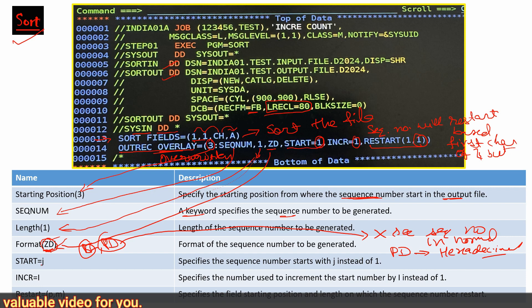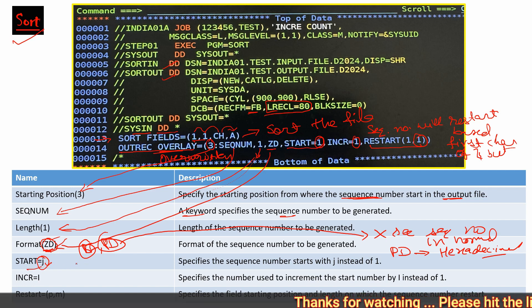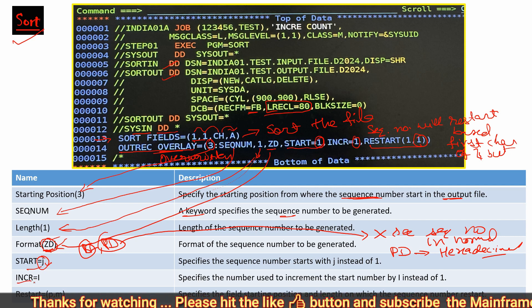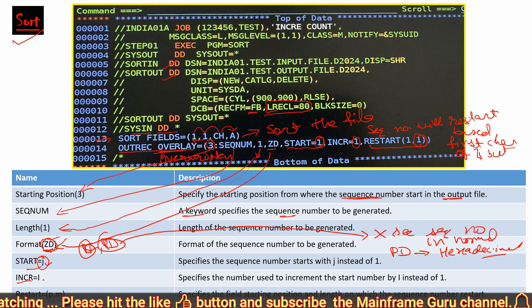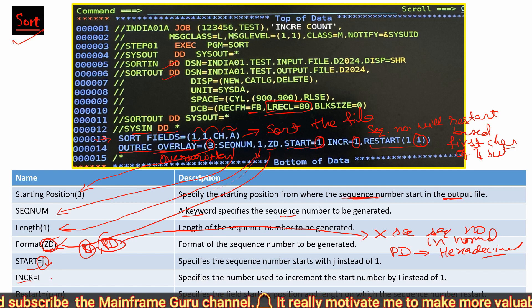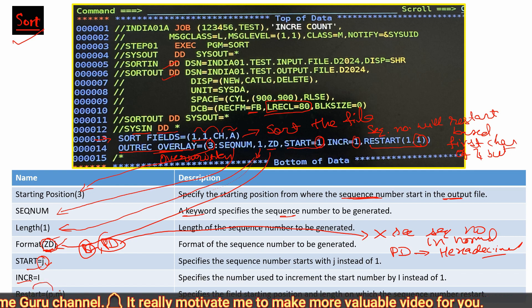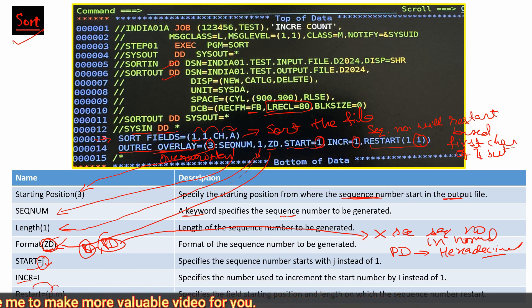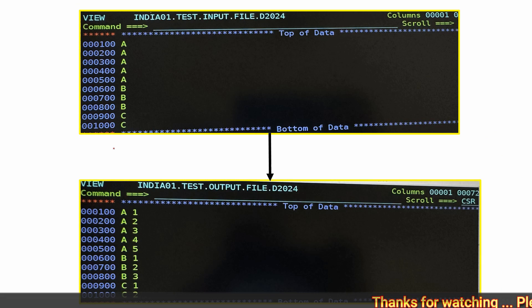We have used zoned decimal so we can see the sequence number. If you use BI or PD, it will not be visible without the help of a tool like a file editor. Then START equal to J means our sequence number will start from J instead of 1. If we do not give START equal to J, the sequence number starts by default from 1. We have used INCREASE equal to I so the sequence number will increase by I instead of 1. Then RESTART P,M means the sequence number will restart based on the data at position P of length M.